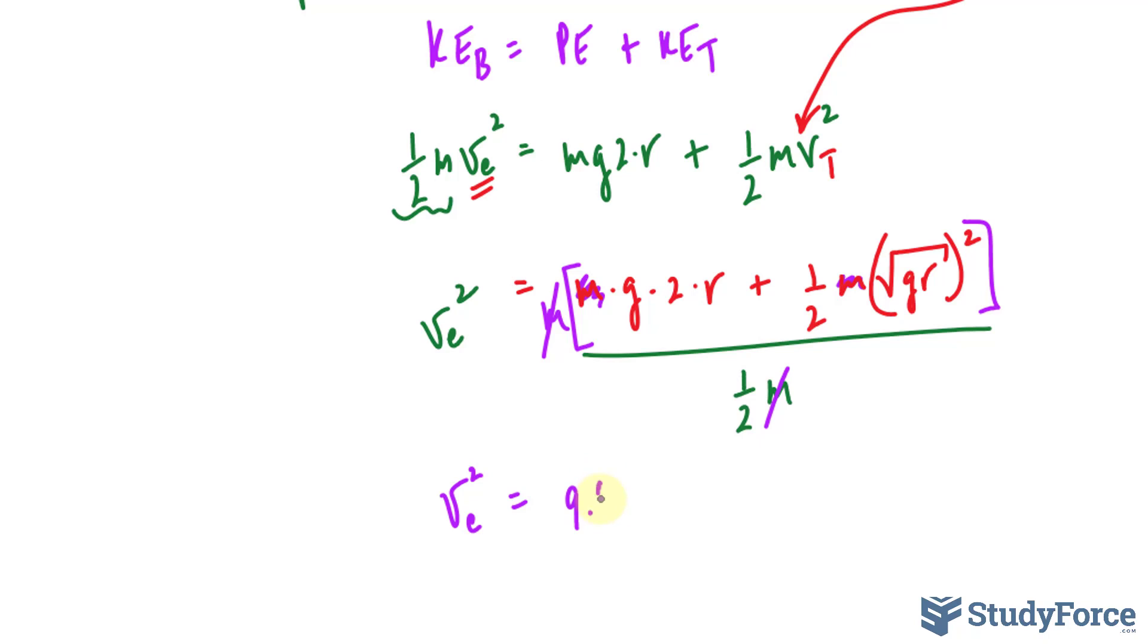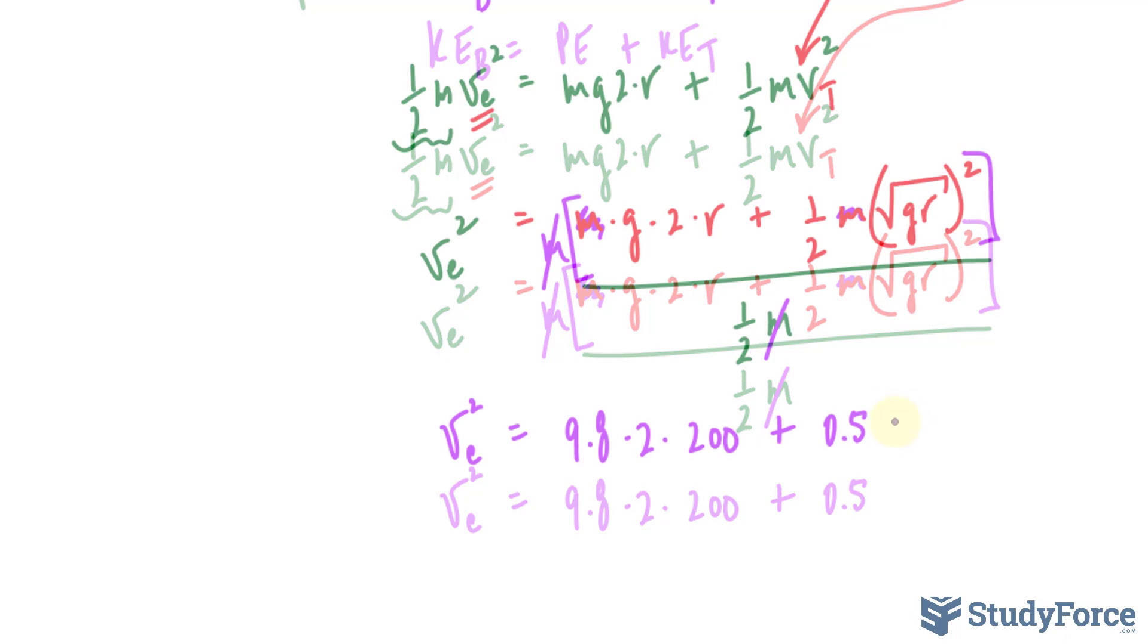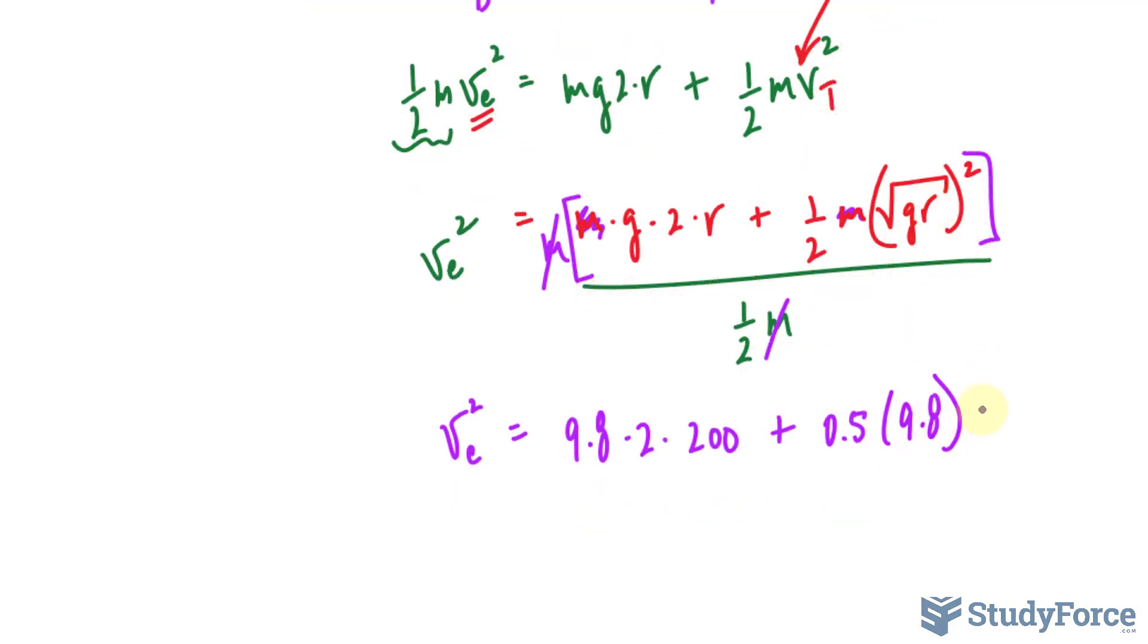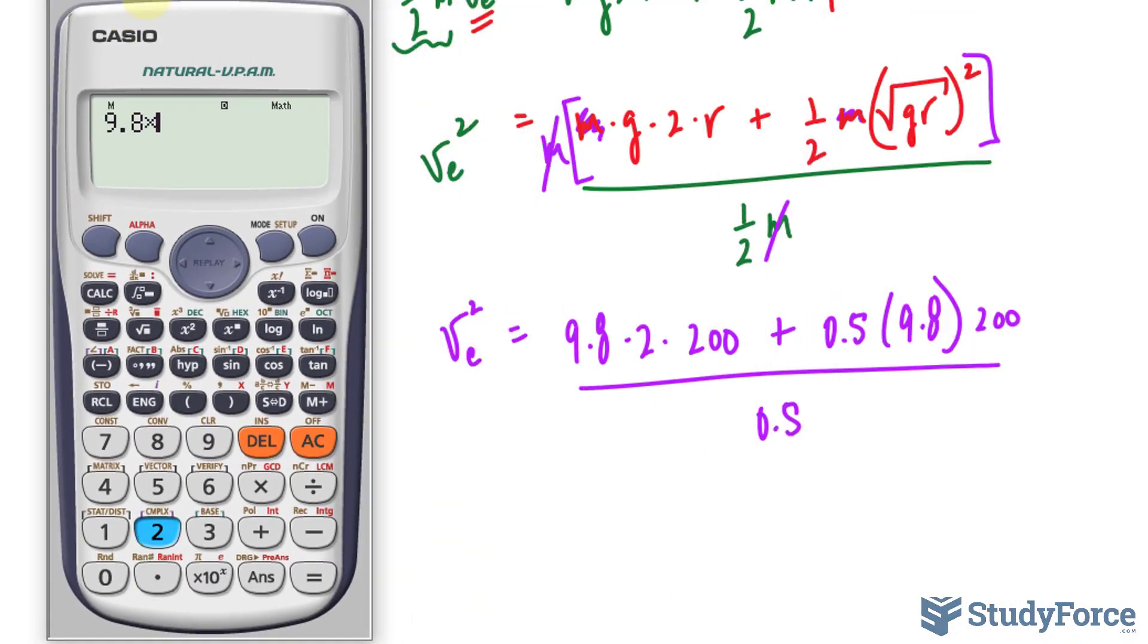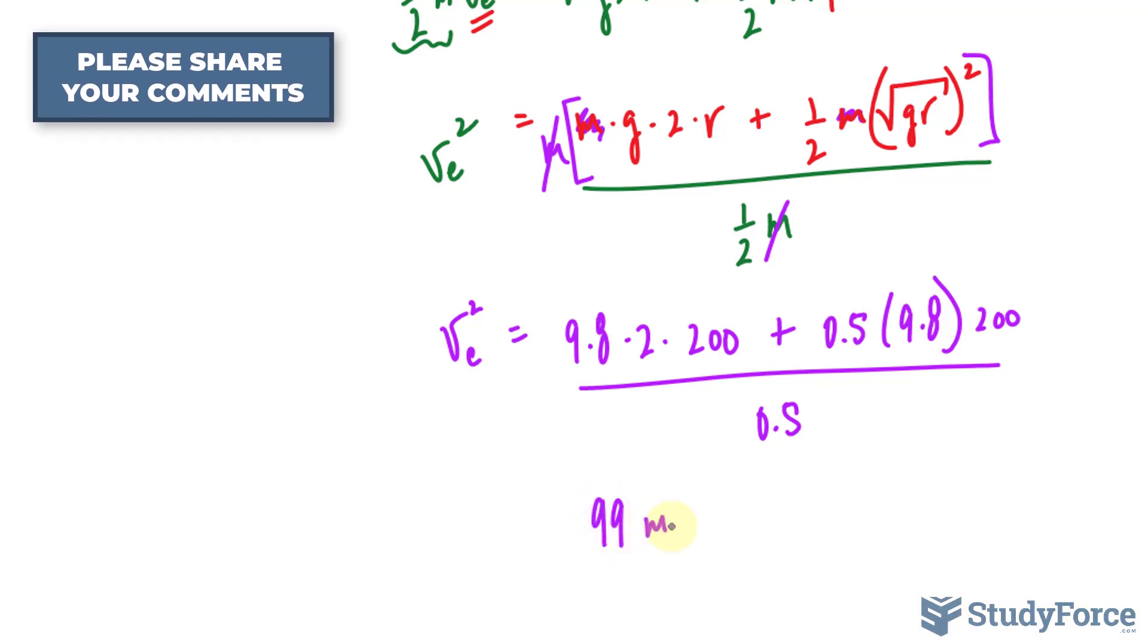Let's fill in 9.8 times 2 times the radius of 200. So that takes care of that first part, plus, and instead of half, I'll write down 0.5, it's easier to work with. The square root and the two will cancel each other out. And we have 9.8 times the radius of 200, all over 0.5. At the conclusion of finding out what this is, we'll square root both sides. So let me just show you really quickly, we have 9.8 times 2 times 200 plus 0.5 times 9.8 times 200. That's the top numerator. We'll divide that by 0.5, gives us 9,800, and then we square root that value to get 98.99, or simply 99 meters per second.